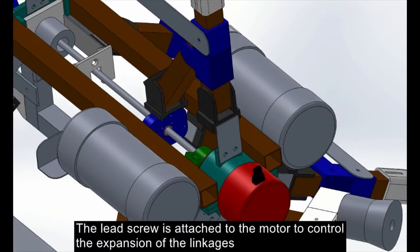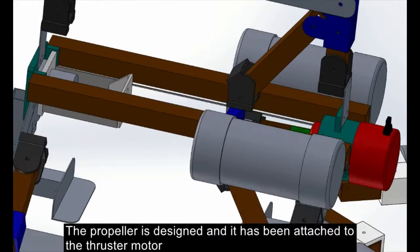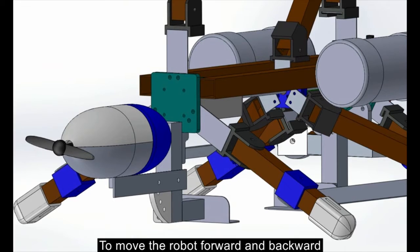The lead screw is attached with motor to control the expansion of the linkages. The propeller is designed and attached to the thruster motor to move the robot forward and backward.